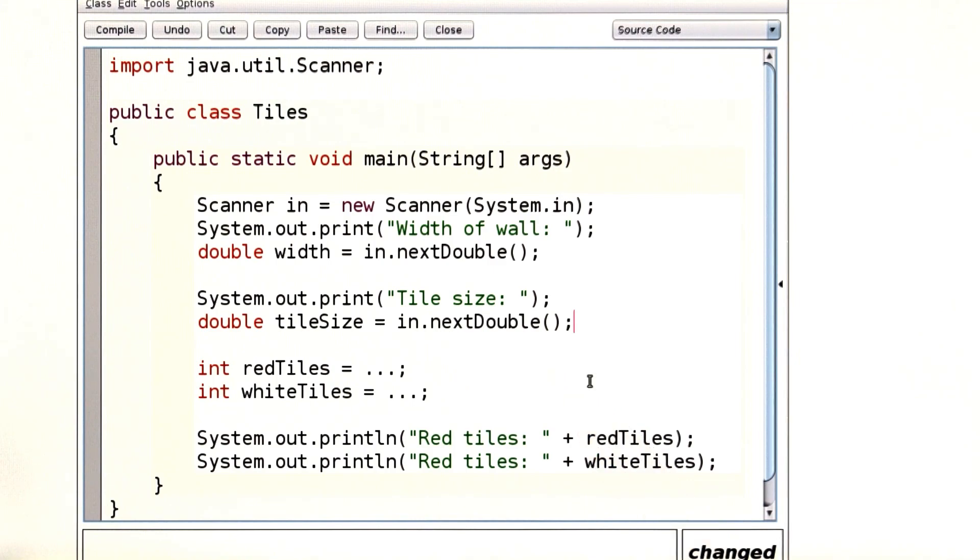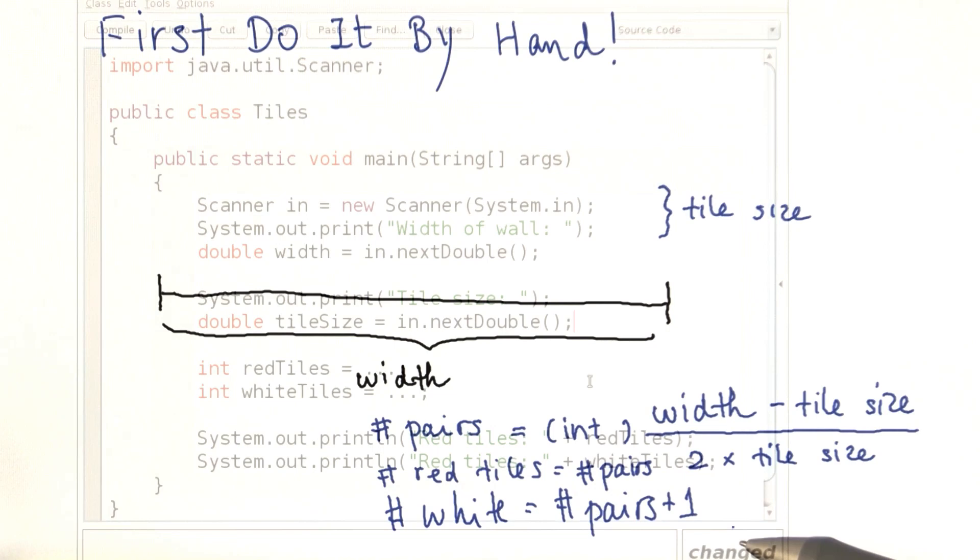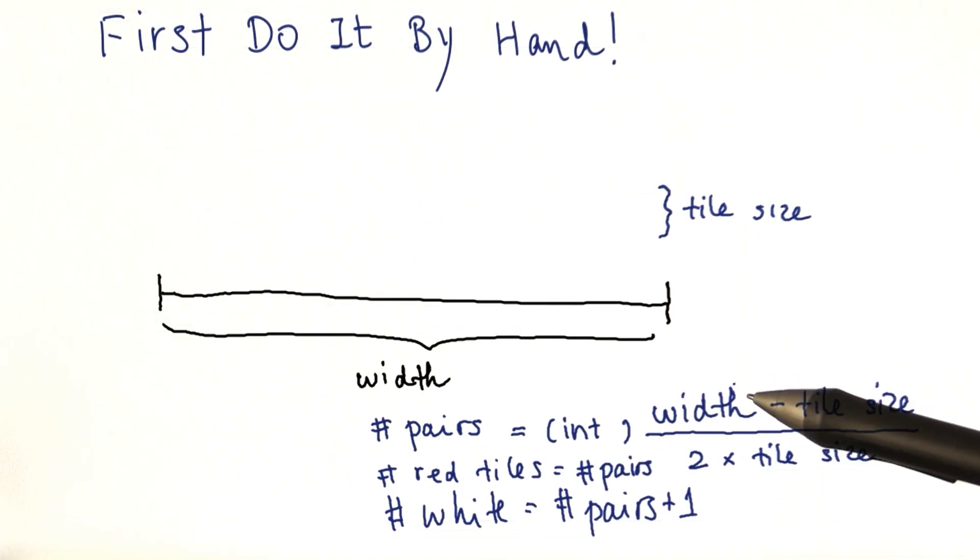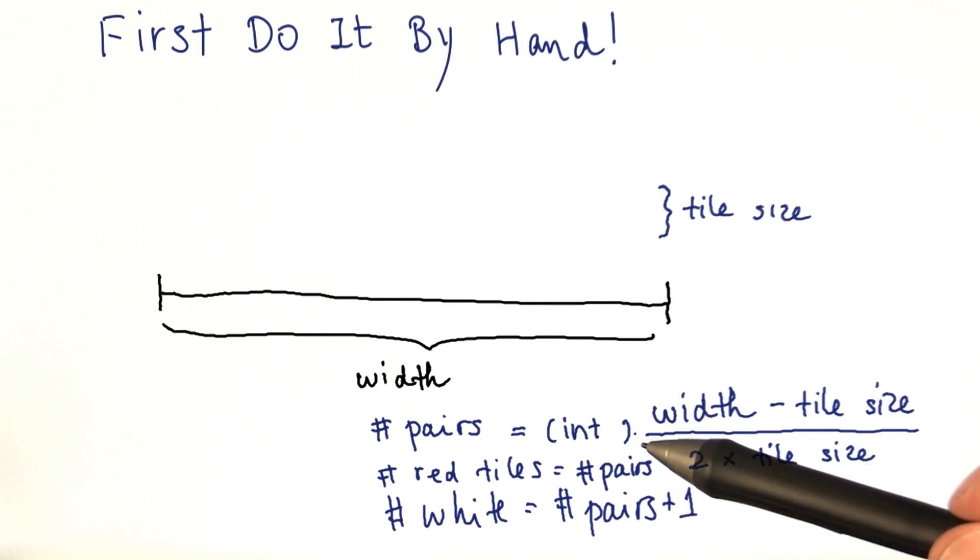Now we did this by hand, and let me show you again the formula that we obtained. That's the formula here. So we take the width minus the tile size, divide by twice the tile size, take the integer part.